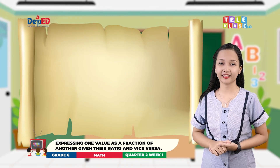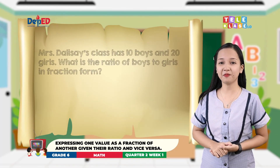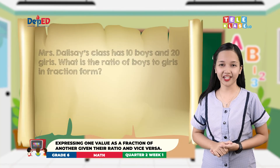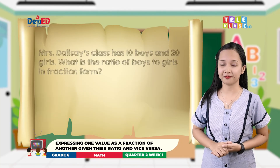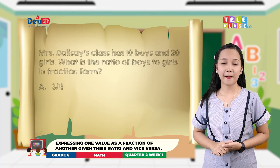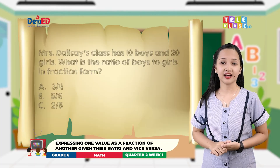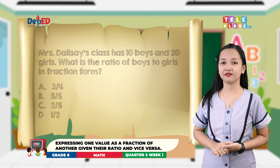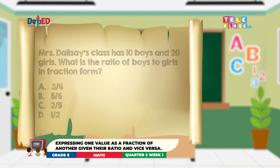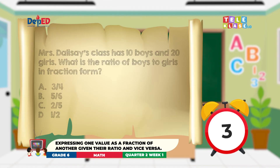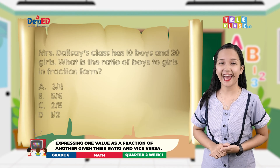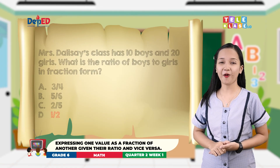Box five question: Mrs. Dalisa's class has ten boys and twenty girls. What is the ratio of boys to girls in fraction form? A, three-fourths; B, five-sixths; C, two-fifths; D, one-half. The answer is ten over twenty, or one-half.